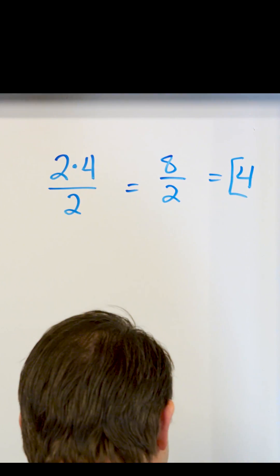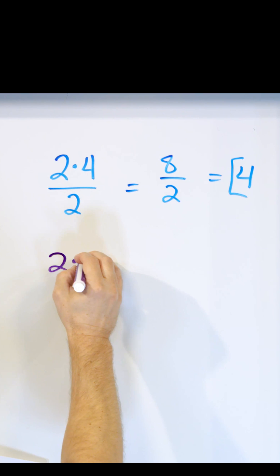All right, now let's do it another way. Let's write it again. 2 times 4 and then divide by 2. We know that the answer is 4, but what's going on here?